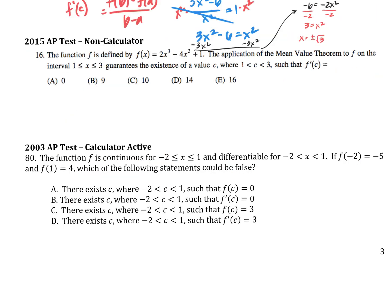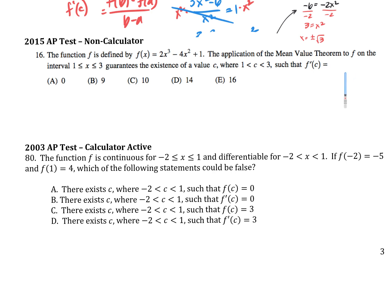Let's try problem 16. It says: the application of the mean value theorem guarantees the existence of a c value — an x — between 1 and 3, such that the slope would be what? Mean value theorem says f prime of c is going to be the same thing as f of b minus f of a all over b minus a. Even if we found f prime, we don't know what we'd plug in there, so let's do the right-hand side instead. My a and b are just my endpoints — a is 1, b is 3.